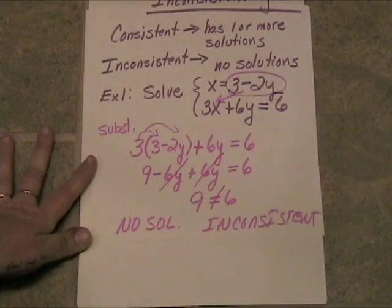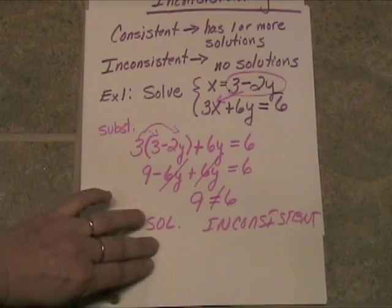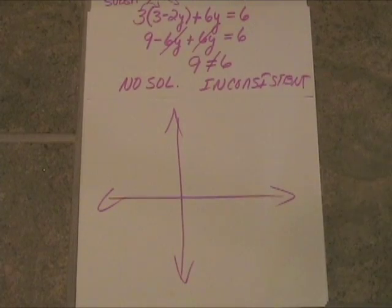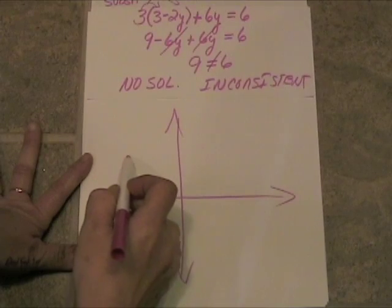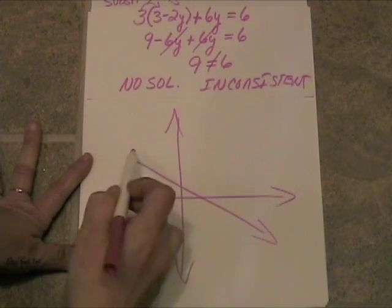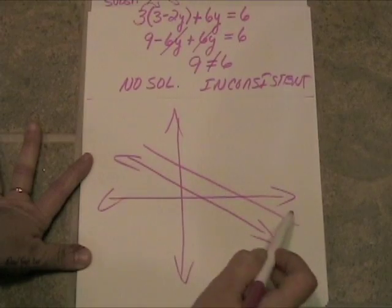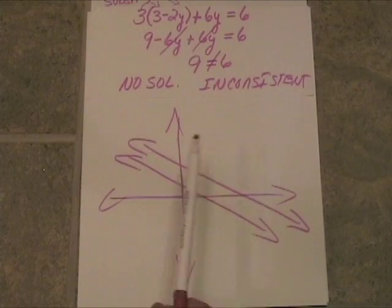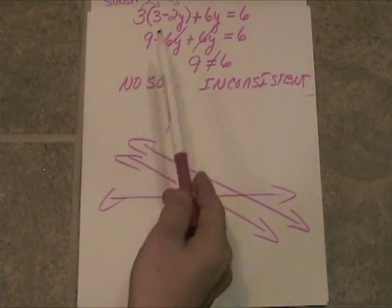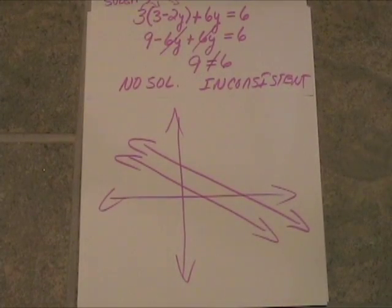And we say it's inconsistent. And what it would look like graphically is the graph on this is actually going to look like two parallel lines. All right. Notice whenever you have parallel lines, they do not share any points in common. So any time that that happens, your algebraic answer is always going to turn out to be inconsistent.